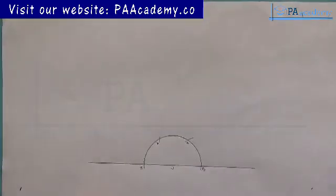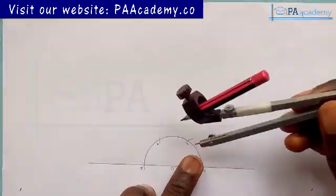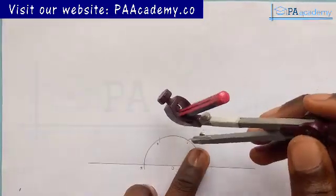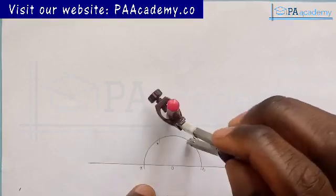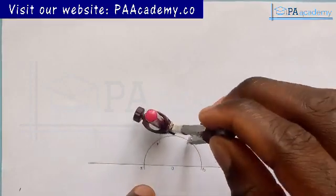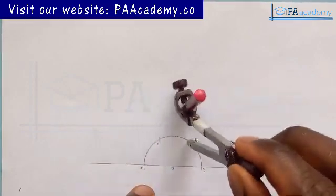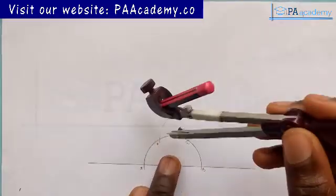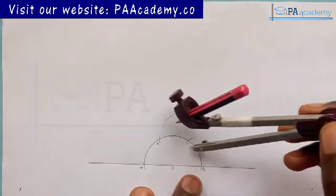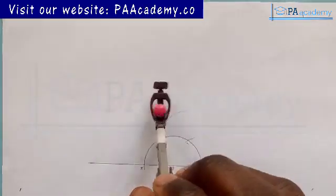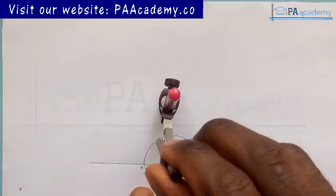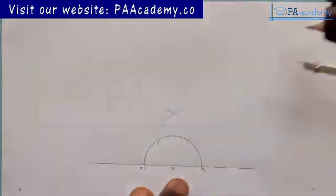What I want to do is to construct angle 90 first. I place the compass on point C with the same length and draw an arc, then place it on point D and draw another arc.